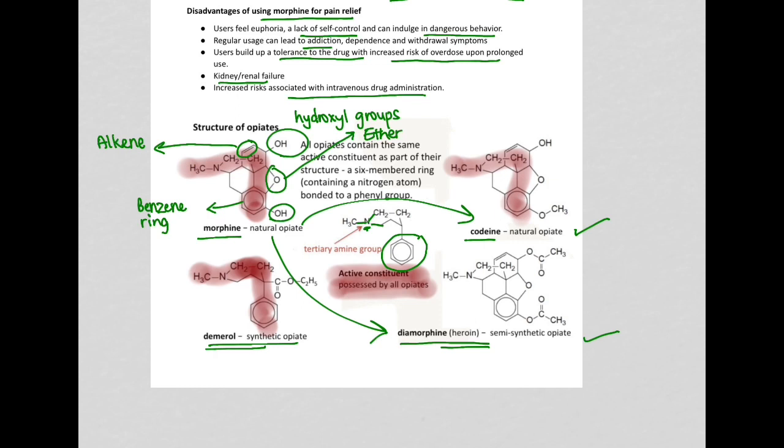If you look at the structure of codeine, you will also see the alkene present here, the hydroxyl, the benzene ring, and the ether. But the only difference is that here you have two hydroxyl groups, but over here you have only one hydroxyl group, and this is also an ether group.